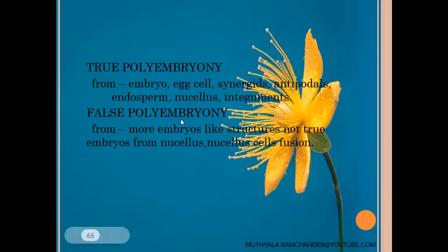The second type is false polyembryony. In false polyembryony, they look like embryo-like structures but are not true embryos. They cannot develop into plantlets. Such embryo-like structures that cannot form plantlets are called false polyembryony.